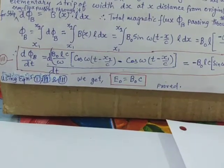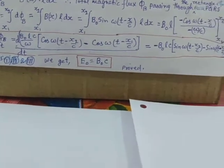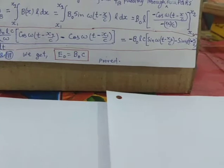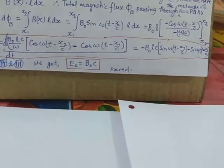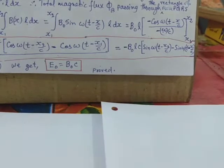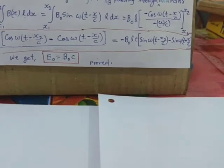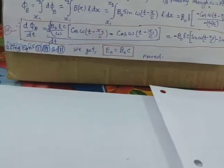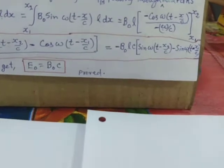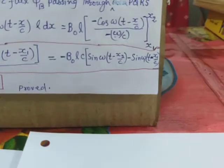When we differentiate d phi B by dt, B₀Lc by omega was already there and differentiating cos(ωt minus x by c) with respect to time brings out a factor of omega, eliminating the omega in the denominator. So we get d phi B by dt equal to minus B₀Lc times [sin(ωt minus x2 by c) minus sin(ωt minus x1 by c)].